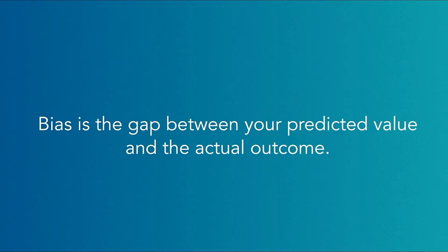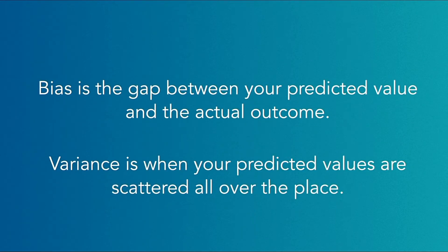Bias is the gap between your predicted value and the actual outcome. Variance is when your predicted values are scattered all over the place.